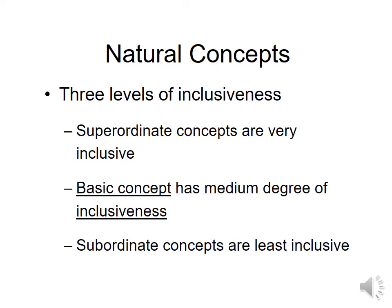There are three levels of inclusiveness with natural concepts. Superordinate — think Superman, high in the sky, covering everything. Basic — right around ground level. And subordinate — think of submarines: the least inclusive, with the least scope.